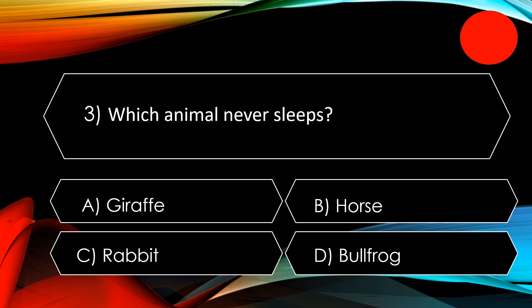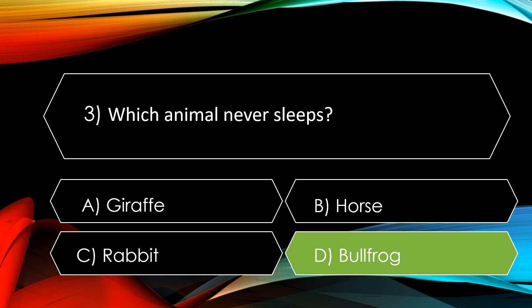Question number three: which animal never sleeps? The options are A. Huff, B. Horse, C. Rabbit, and D. Bullfrog. The correct option is D. Bullfrog. When tested for responsiveness by being shocked, it had the same reaction whether awake or resting, proving that the bullfrog never sleeps.